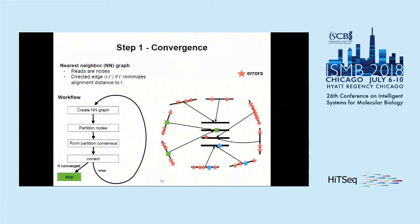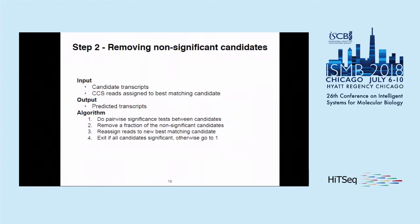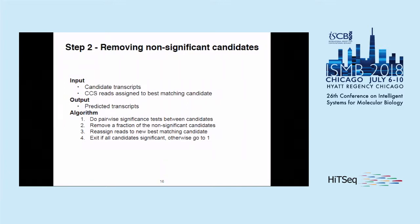The final step of phase one is to take the four unique candidates and assign the original CCS reads to their best matching candidate. That is the output of the first step. In the second step, the input is the candidate transcripts from the previous step along with the original CCS reads assigned to the best candidate, and the output is the final predicted transcripts from IsoCon.